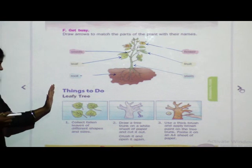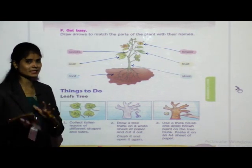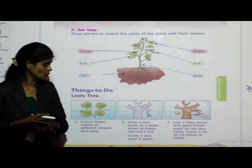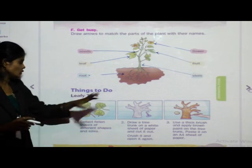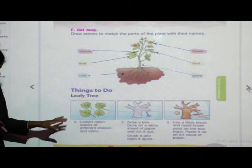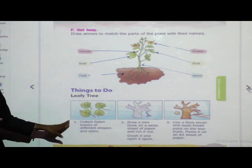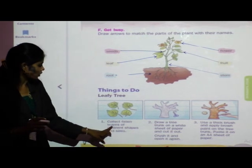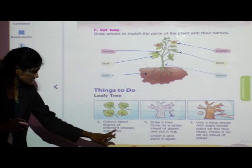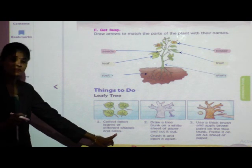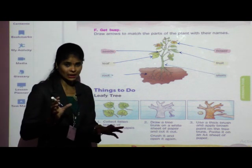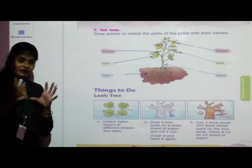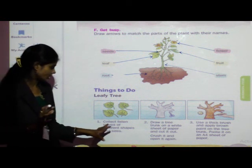Now one activity is given — I will explain it and you have to do it at home. Activity: leafy trees. First, collect fallen leaves of different shapes and sizes from trees in your surroundings.